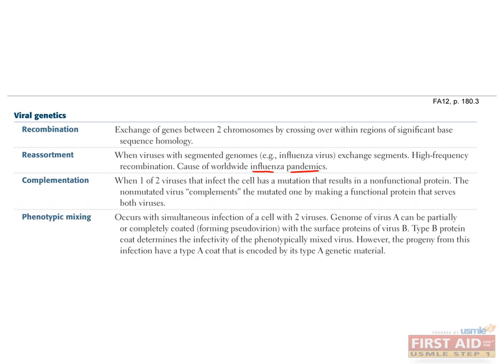In phenotypic mixing — or more precisely, phenotypic masking — a single host cell is infected with two related viral strains. The genome of one strain, virus A, is packaged within the capsid of another, virus B, so that the outside capsid is composed of proteins encoded completely by virus B, but the inside of the virus contains genetic material from virus A. Therefore, progeny of the pseudovirion will contain the same genetic material and capsid proteins as those encoded by virus A, but the virus B capsid determines the infectivity patterns of the pseudovirion.